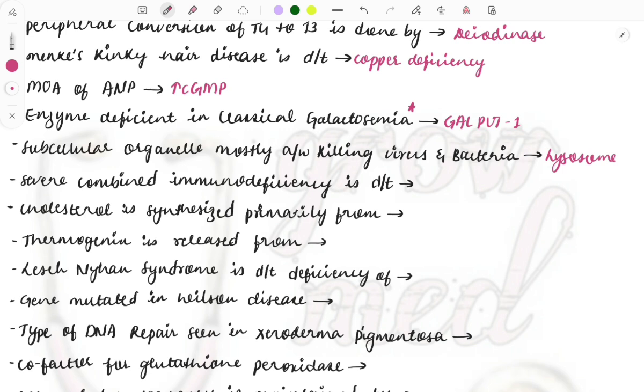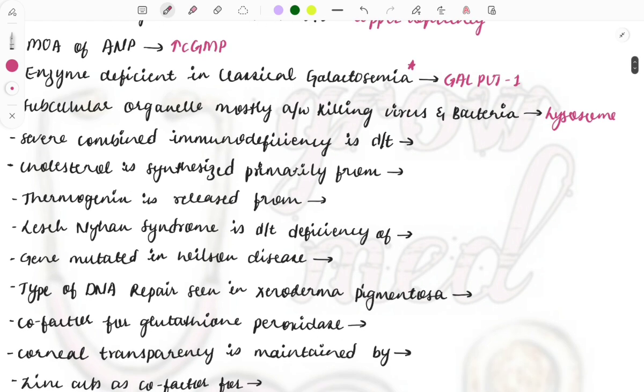Severe combined immunodeficiency occurs due to deficiency of which enzyme? It is the ADA deficiency. So deficiency of this enzyme will be causing the severe combined immunodeficiency.